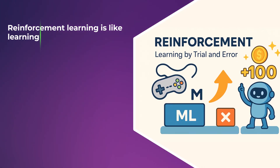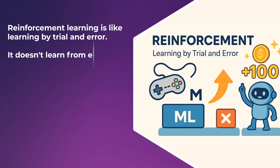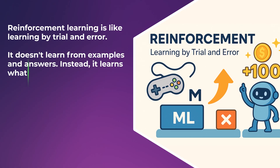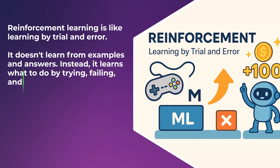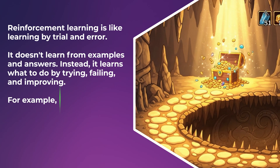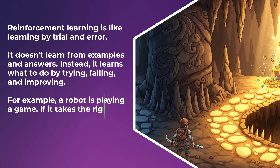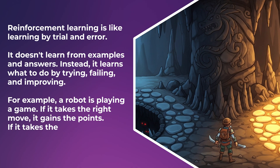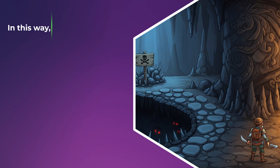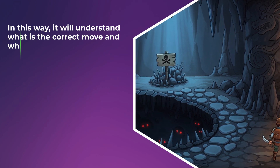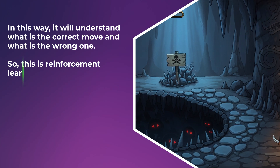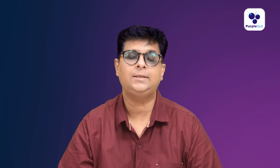Reinforcement learning is like learning by trial and error. It doesn't learn from examples and answers — instead, it learns what to do by trying, failing, and improving. For example, a robot playing a game: if it takes the right move, it gains points; if it takes the wrong move, it loses points. In this way, it understands what the correct move is. In our FoodiCard application, with the help of machine learning, we can figure out which order the customer will place next and give personalized offers based on past orders.